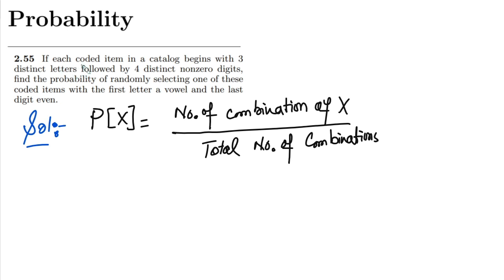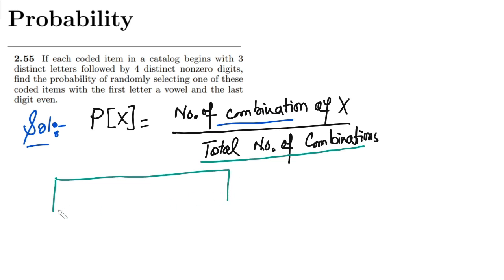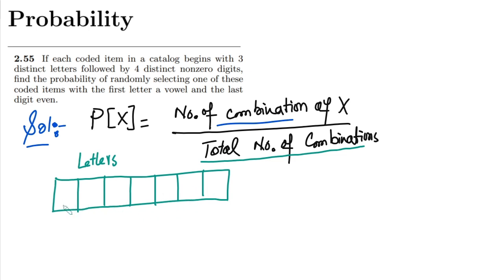Here in this question we have to see how many items we have. Each coded item begins with three distinct letters — I'll represent these in green — so at the first position I will have 26 letters, if one has been occupied here I will have 25, and at the third position I will have 24.